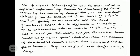The fractional light absorption can be measured in a separate experiment. By knowing the quantum yield phi and estimating the extent of decomposition, I₀, the incident intensity, can be calculated in units of einsteins cm⁻³ s⁻¹ falling on the reaction cell. To avoid geometrical errors due to differences in absorptivity of the actinometer solution and the sample, the same cell is used for actinometry and for the reaction under conditions of equal optical densities.